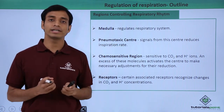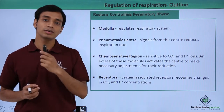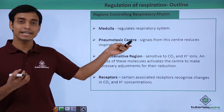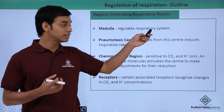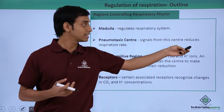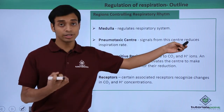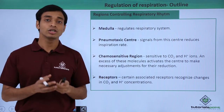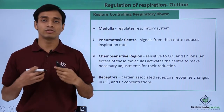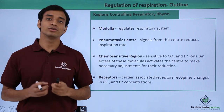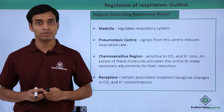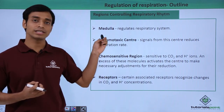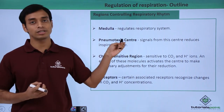The pneumotaxic center generates signals. These signals actually reduce the inspiration rate of respiration, so if the inspiration rate is reduced it will overall reduce the rate of respiration as well. This is the pneumotaxic center of the brain which controls the respiration rate.